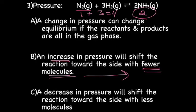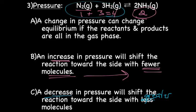If we decrease the pressure — think of letting go of the balloon — we now have a larger volume and the molecules are less compressed. When we decrease pressure, we shift the reaction toward the side with the greater number of molecules, which is the reactant side. So in this reaction, decreasing pressure causes the reaction to go in the reverse direction. Keep in mind that pressure effects only apply when all reactants and products are in the gas phase.